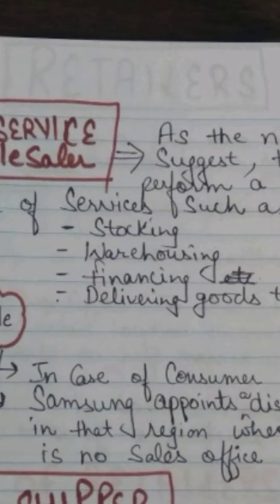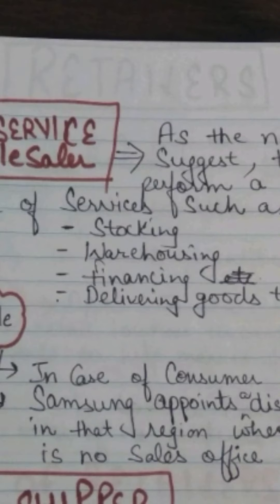The second type is the full service wholesaler. As the name suggests, they perform a broad range of services — stocking, warehousing, providing finance and credit facilities, and delivering goods. They handle the entire range of functions. These wholesalers are typically used in the case of consumer durable items.